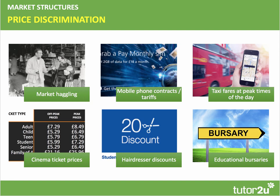With first degree discrimination, you charge the maximum price consumers are willing to pay — market haggling in a street store could be an example of moving towards that. With second degree discrimination, you charge a different price depending on the quantity bought; for example, you might get a better deal on your mobile phone tariff if you buy a monthly plan offering more data at a slightly lower cost per unit.